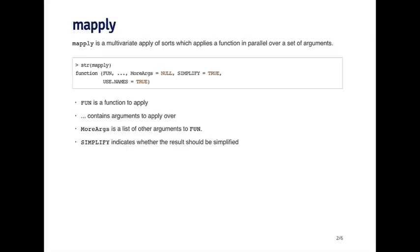The function arguments for mapply are a little bit different because it has to allow for a variable number of arguments. The first argument to mapply is the function you want to apply. The function passed to mapply has to have at least as many arguments as the number of lists you're going to pass to mapply. The things that will be coerced to a list are passed through the dot-dot-dot argument.